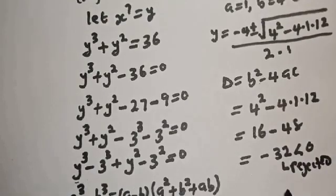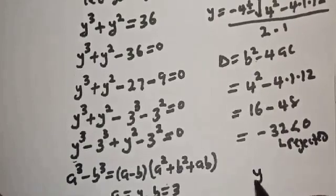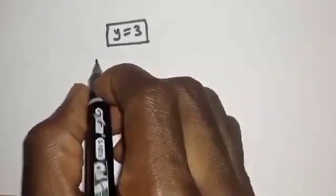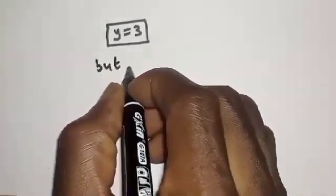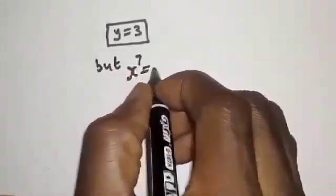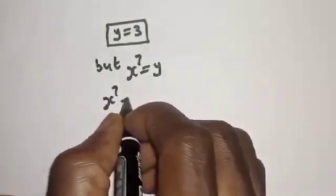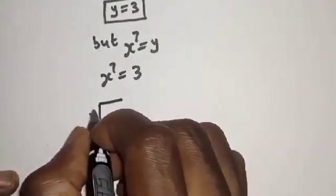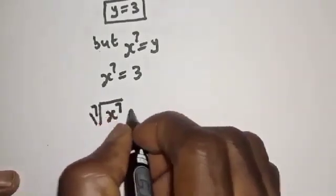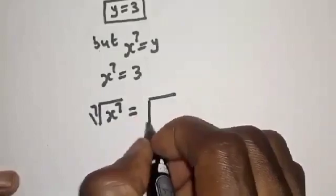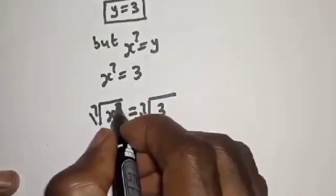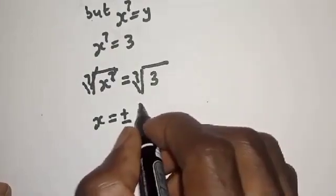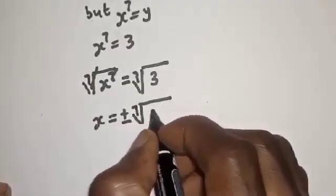The only valid solution is y equals 3. Since s raised to power 7 equals y, we have s raised to power 7 equals 3. Taking the seventh root of both sides, the seventh root of s⁷ equals the seventh root of 3, so s equals plus or minus the seventh root of 3, which can be written as 3 raised to power 1 over 7.